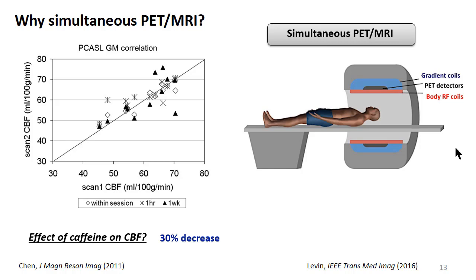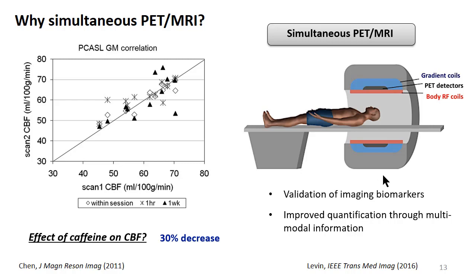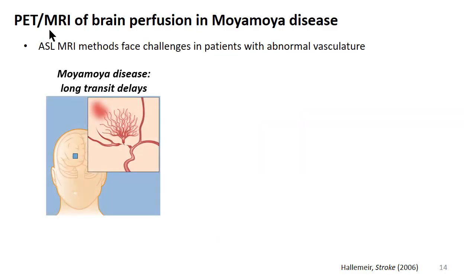One way to get around this potential confounder is to take advantage of new hybrid technologies such as simultaneous PET-MRI, where the PET detectors are integrated into the bore of the magnet. This is a good opportunity to validate physiological markers that could vary between scan sessions and also improve quantification with multimodal information. I want to go through an example of what this looks like in patients with Moyamoya disease.